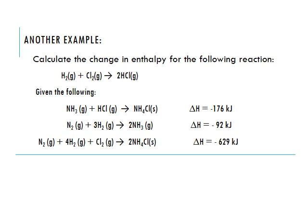Here's our second example: calculate the change in enthalpy for the reaction of hydrogen gas plus chlorine gas forming two molecules of hydrogen chloride gas. We are given the following equations. Notice we have hydrogen and chlorine in the reactions, but also nitrogen, ammonia, and other compounds — we'll want to cross all of those out by the end, leaving only hydrogen, chlorine, and hydrochloric acid.